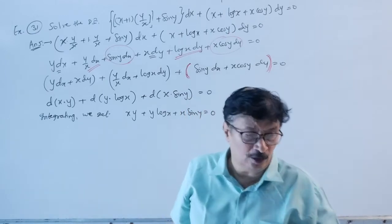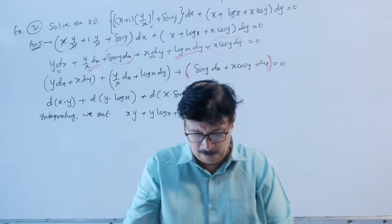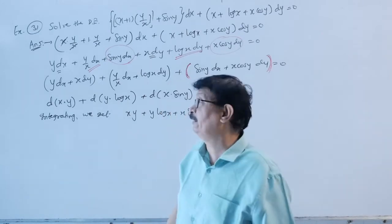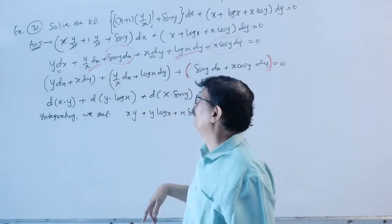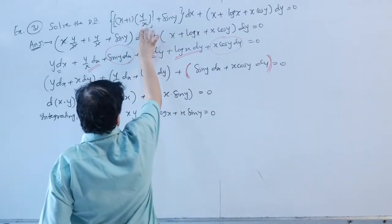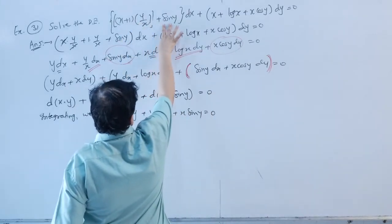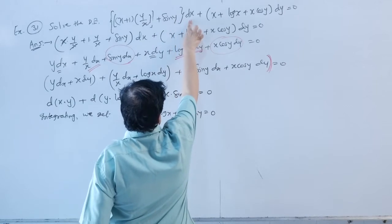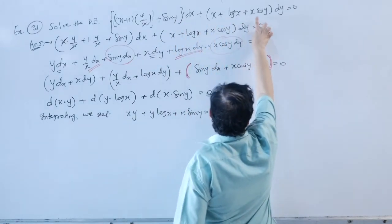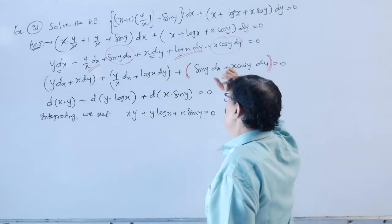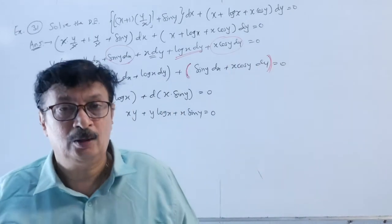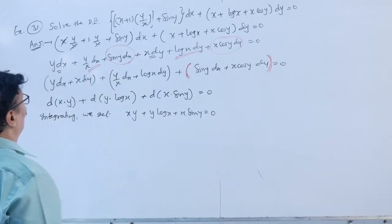Now examples based on the differential coefficient formulae we just studied. Example 31: Solve (x + y·(y/x) + sin(y))dx + (x + log(x) + x·cos(y))dy = 0. This looks very difficult initially, so let us open the brackets and rearrange.